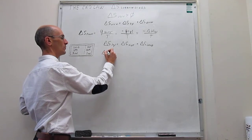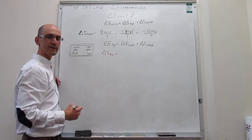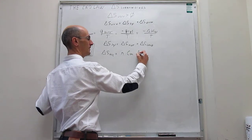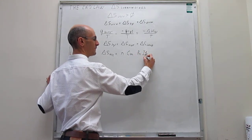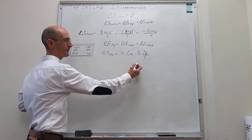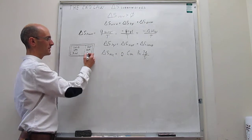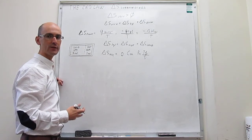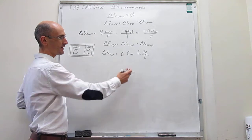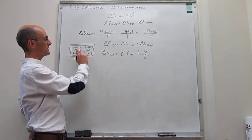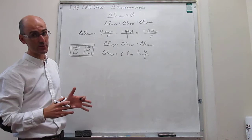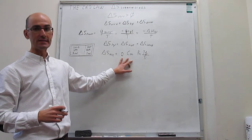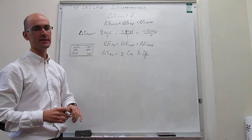For each subsystem, because the only thing happening is a change in temperature, the entropy change is given by N times the molar heat capacity times the natural log of the final temperature over the initial temperature. We have one mole of hot water and three moles of cold water. The molar heat capacity of liquid water is 75.3 J/(mol·K). The initial temperatures are known (100°C and 0°C), but we must first determine the final temperature before we can calculate the entropy changes.